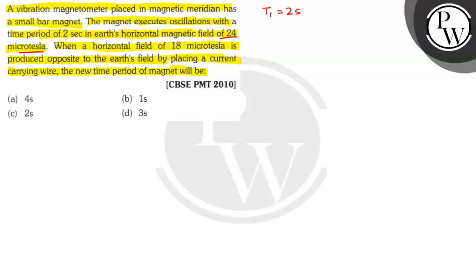So T1 is given as 2 seconds and B1 is given as 24 into 10 to the power minus 6 Tesla.